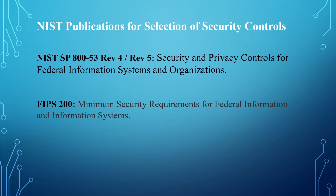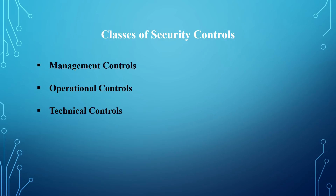The second publication is FIPS 200, which covers the minimum security requirements for federal information and information systems. There are three classes of security controls: the management controls, the operational controls, and the technical controls. The management controls focus on the management of risk and information system security. The operational controls are primarily implemented and executed by people. The technical controls are implemented and executed by the information system through automated means.